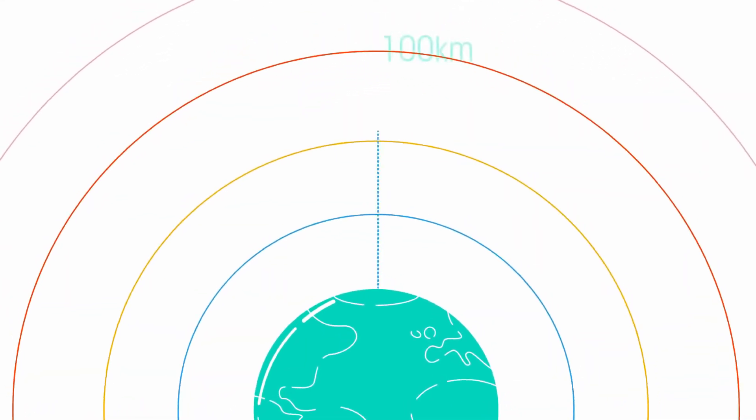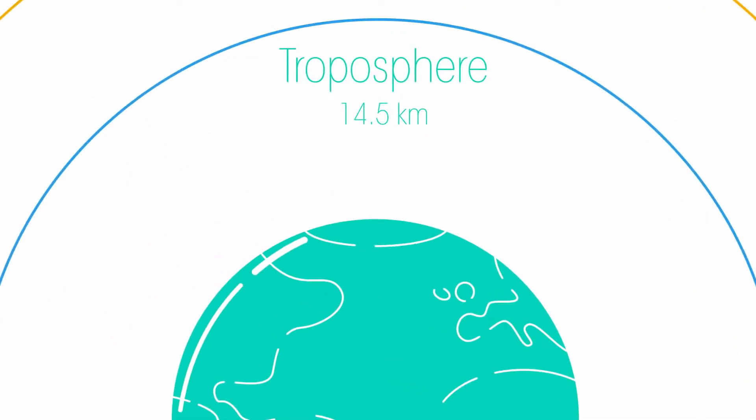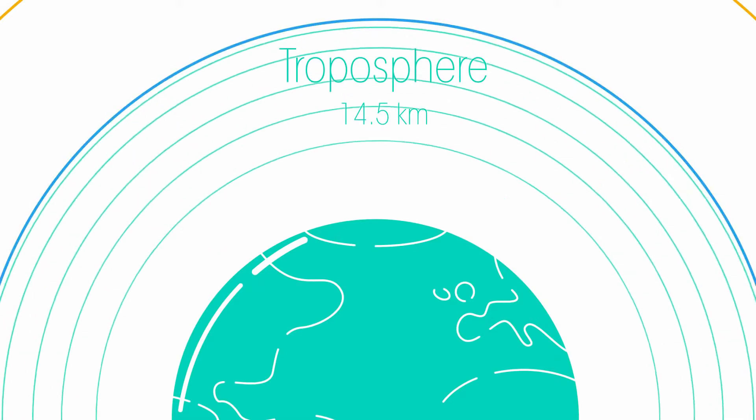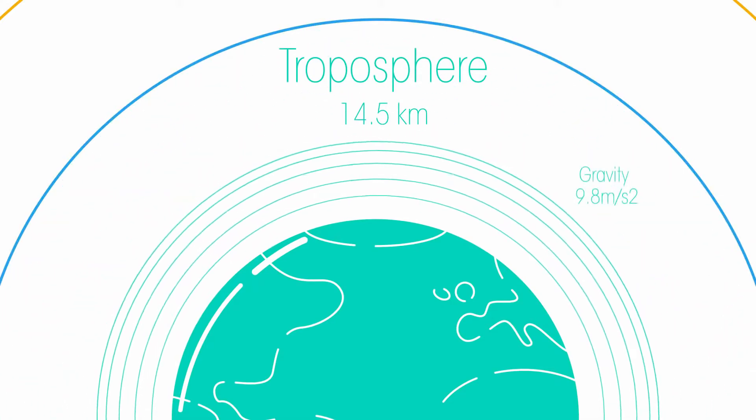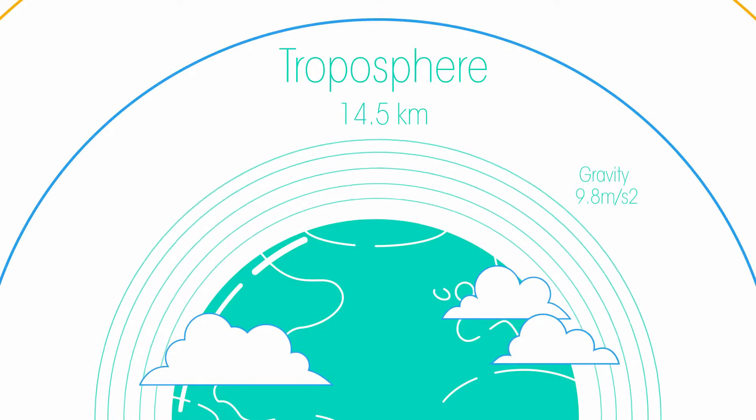The atmosphere is about 100 kilometres thick and is broken down into different layers. It starts with the troposphere, closest to the Earth, which extends to 14.5 kilometres. Thanks to gravity, this is the most dense part and is where the clouds are found. Nearly all of our weather happens in here.